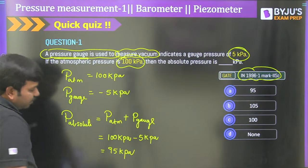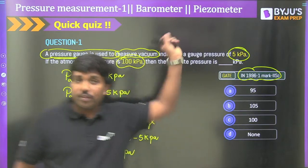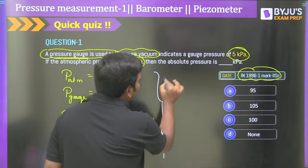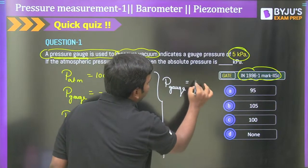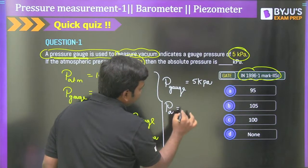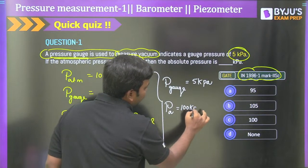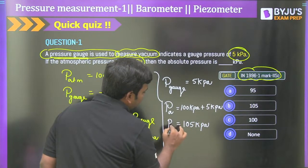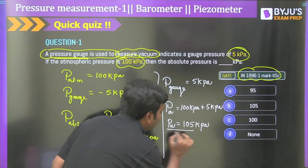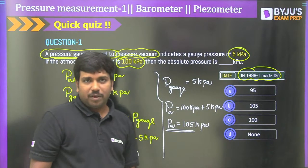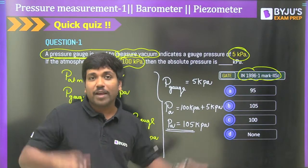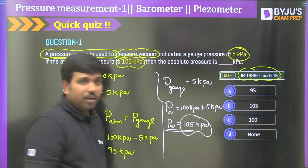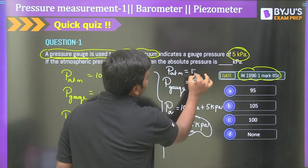If you take gauge pressure as positive 5 kPa, absolute pressure would be 105 kPa, which is more than atmospheric. But we just discussed that vacuum pressure is lower than atmospheric — so 105 kPa cannot be correct. The correct answer is 95 kPa, which is less than atmospheric pressure. That will happen when dealing with vacuum because vacuum pressure is negative, so absolute pressure should be less than atmospheric.